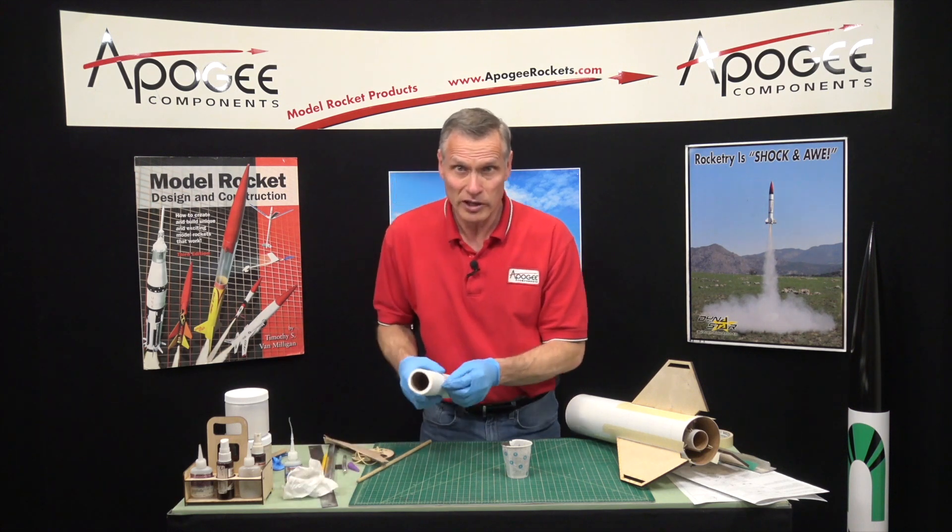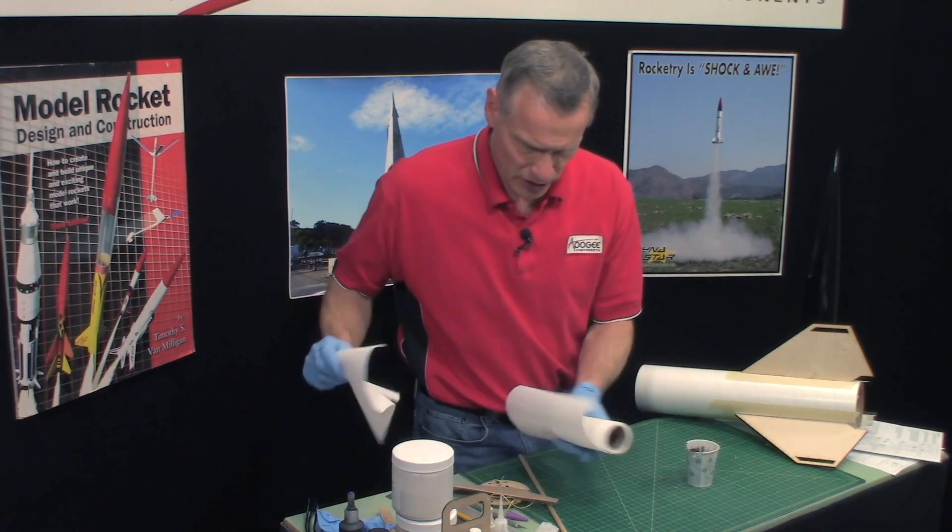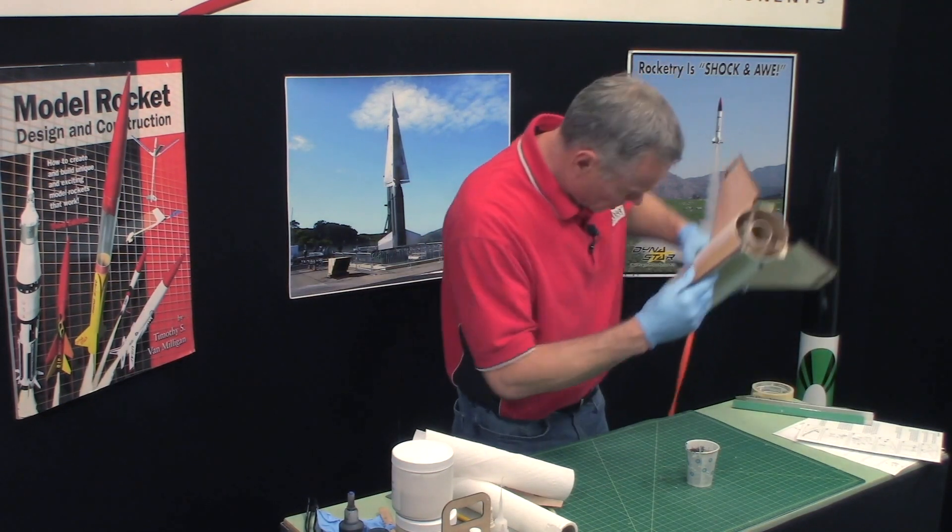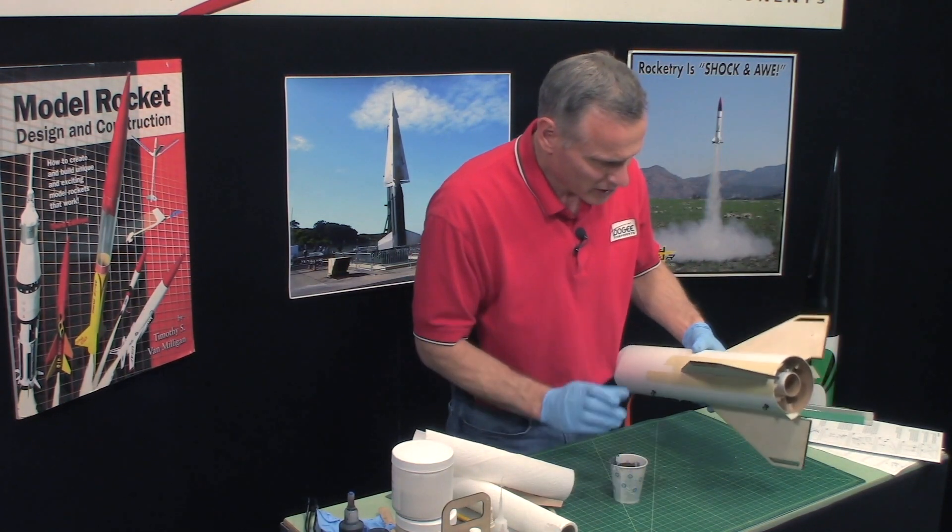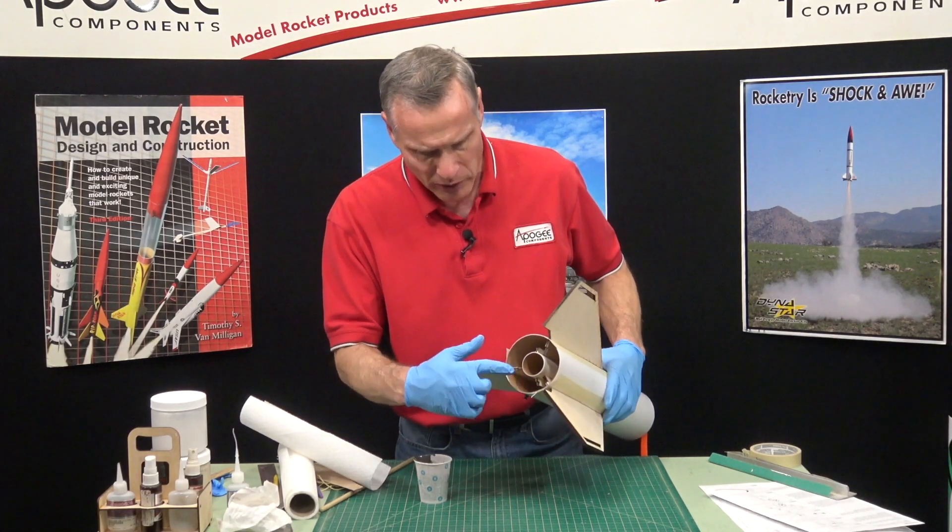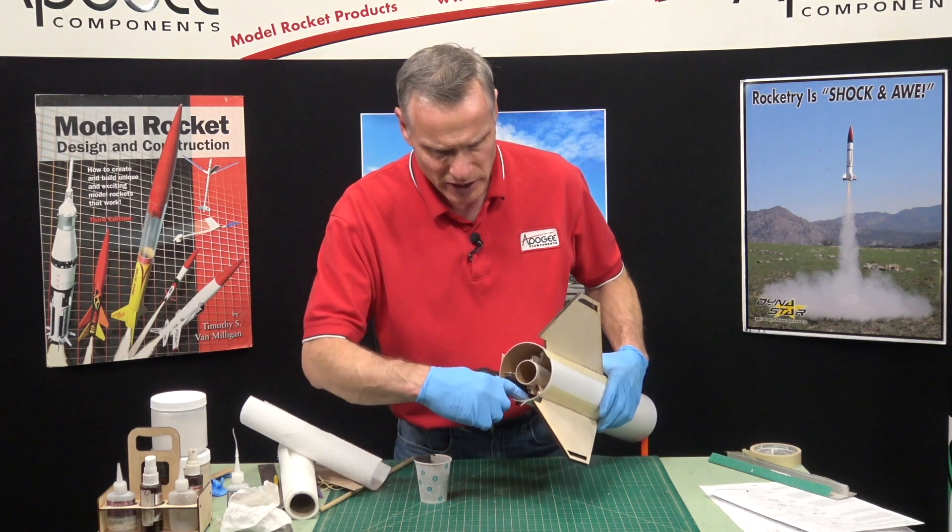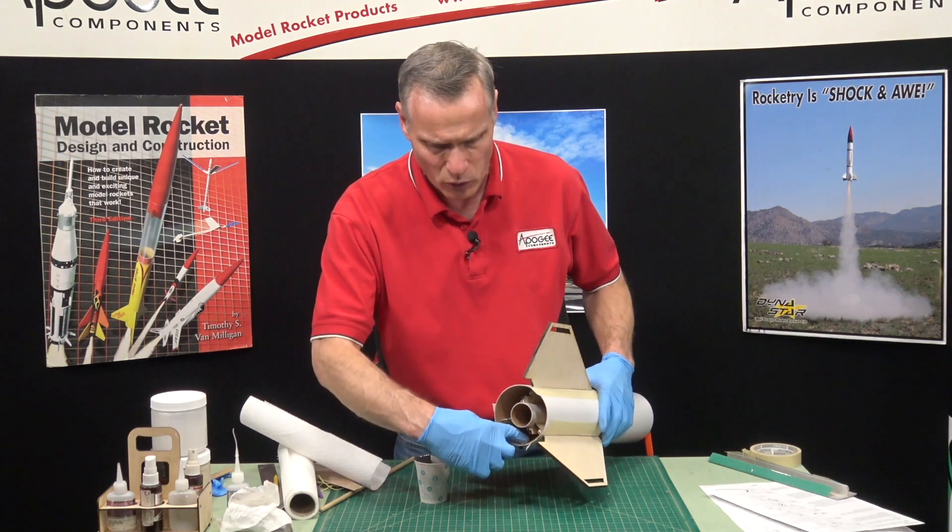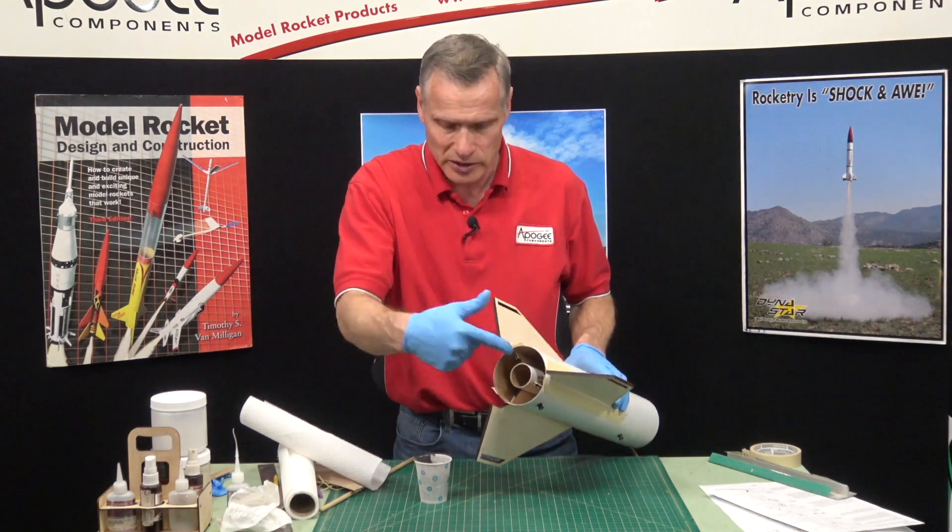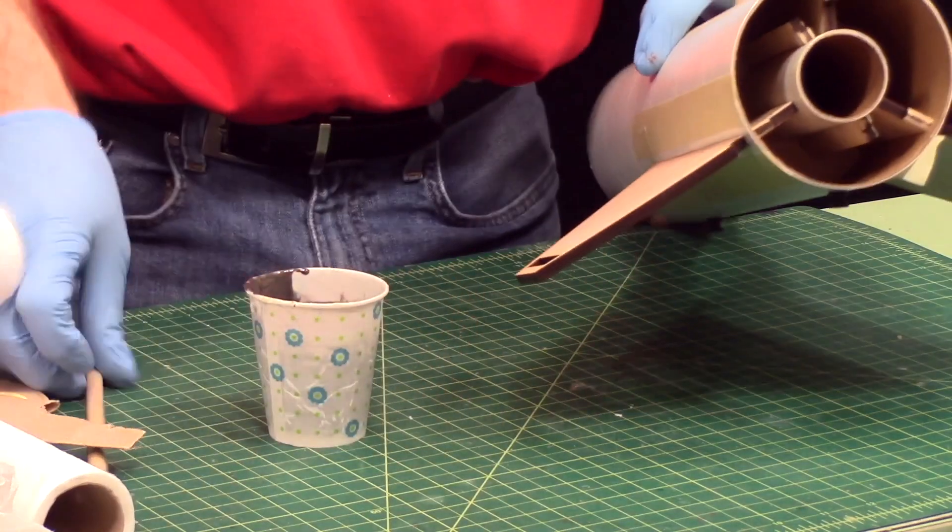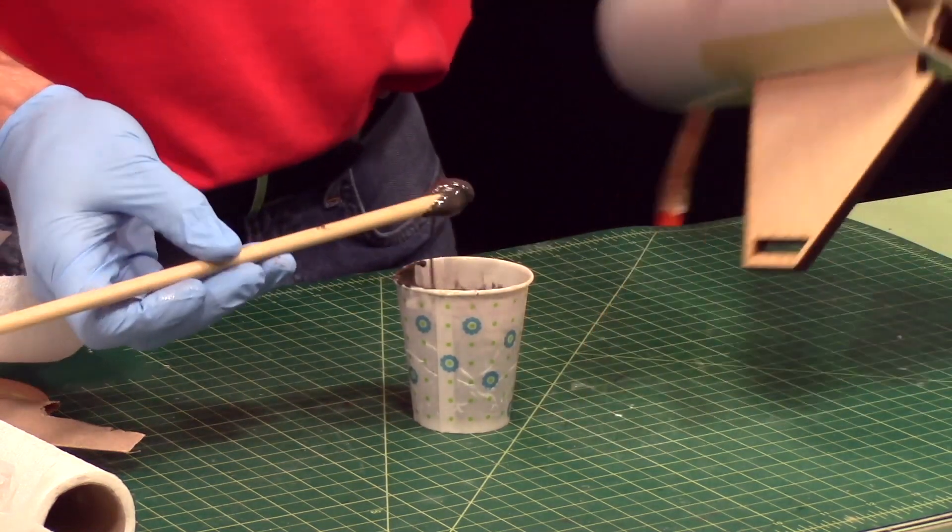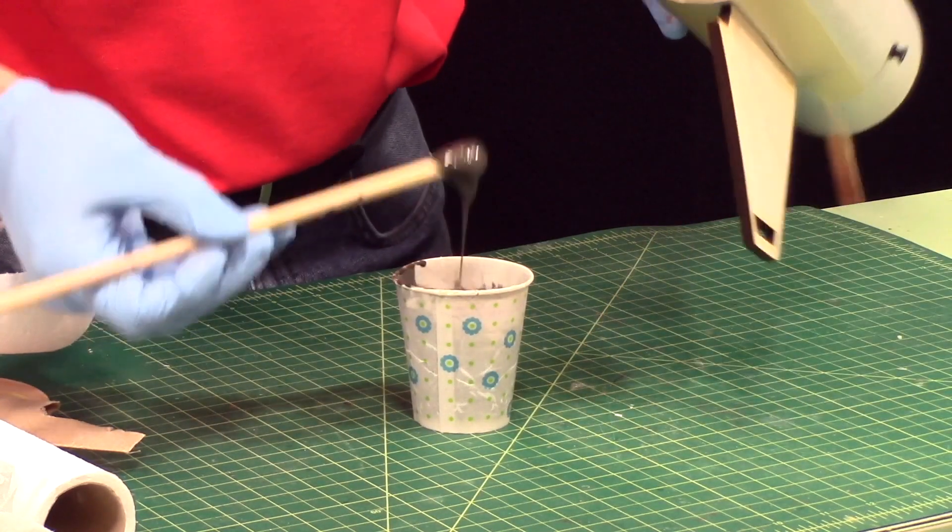So I have lots of paper towels handy for this because this is where it gets messy. Okay so the shock cord just fell out the bottom, that's okay. What we want to do is to put epoxy everywhere inside of there including over top of that weld nut and on the bottom of the nut inside there. I've got a long dowel I'm going to use to kind of smear it around on the inside of there.